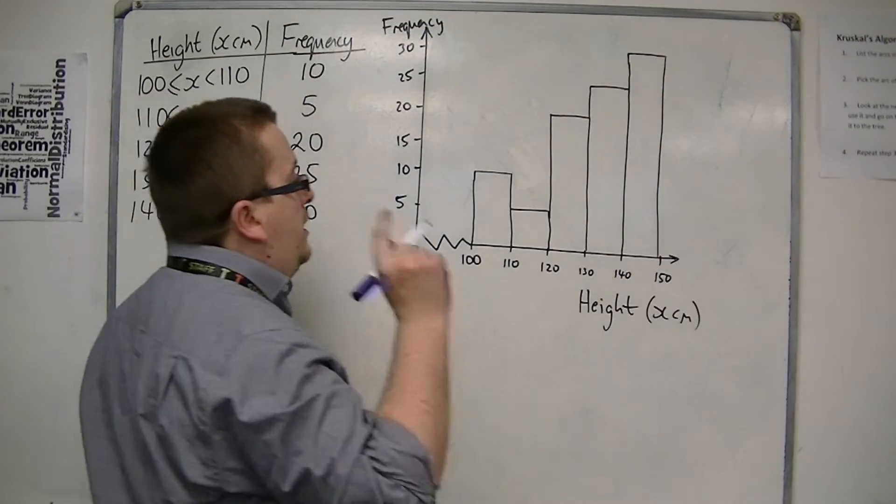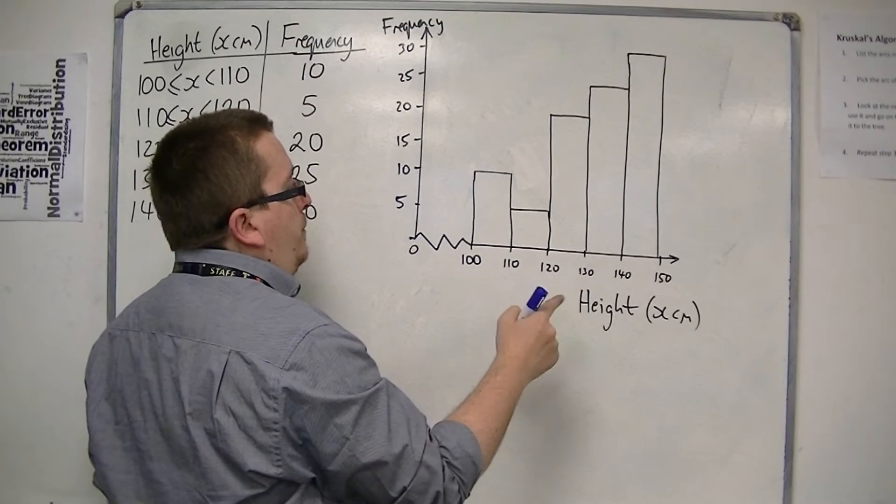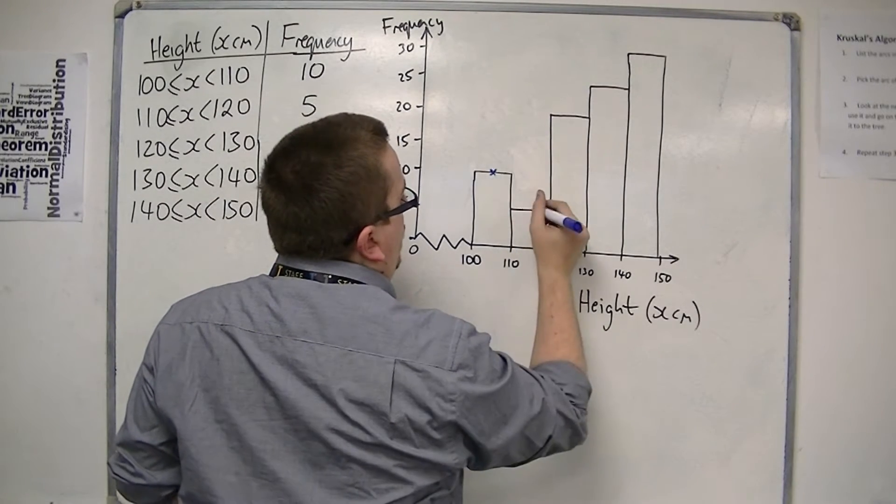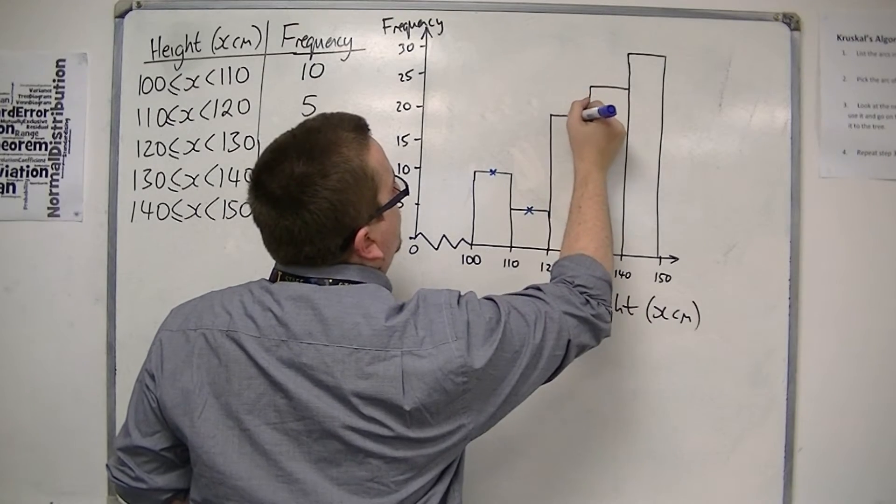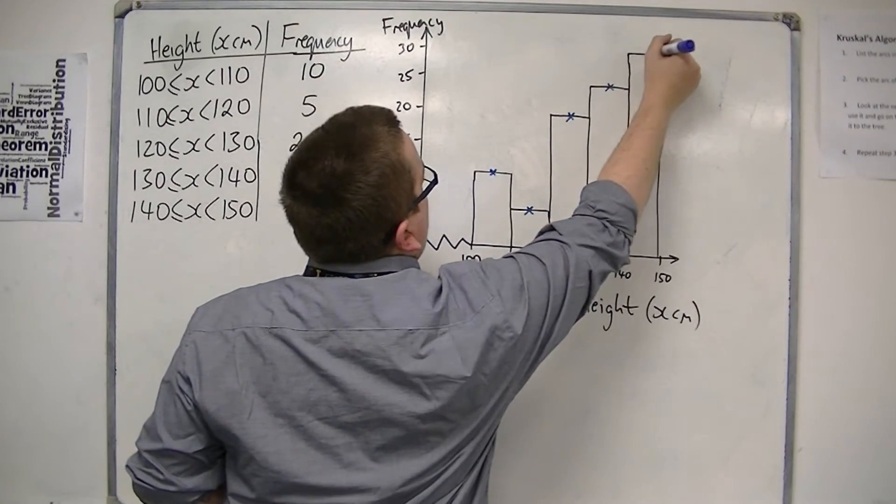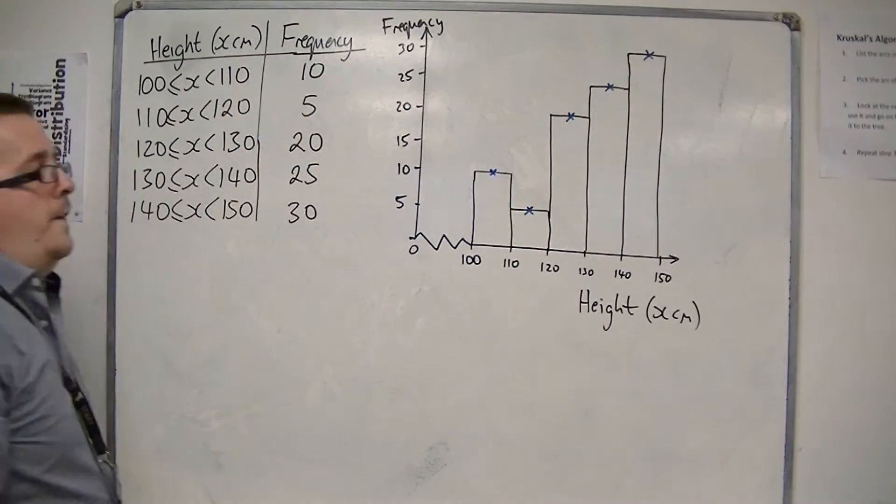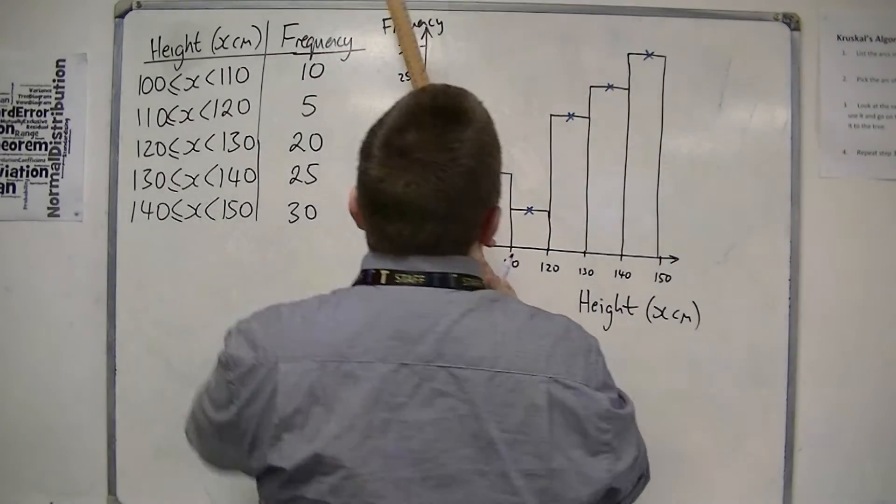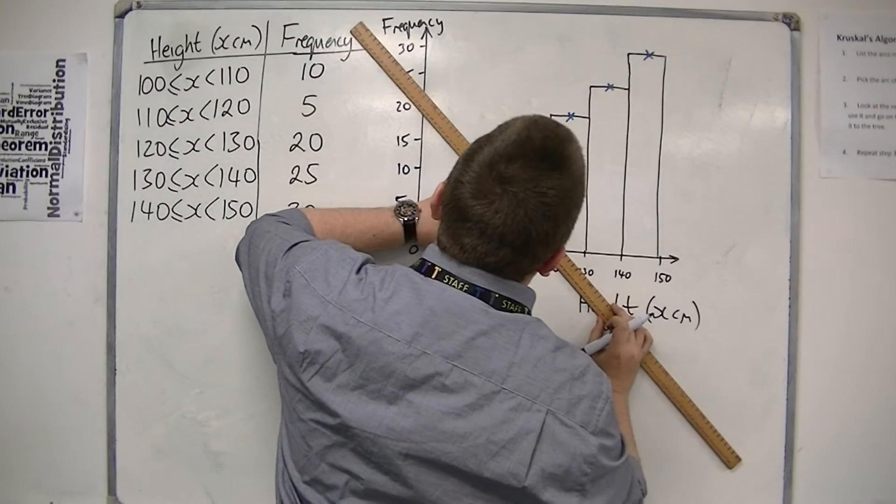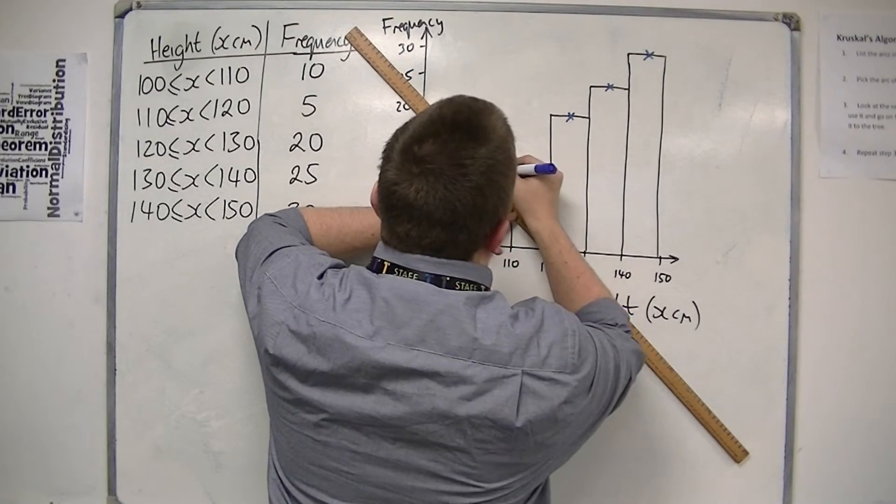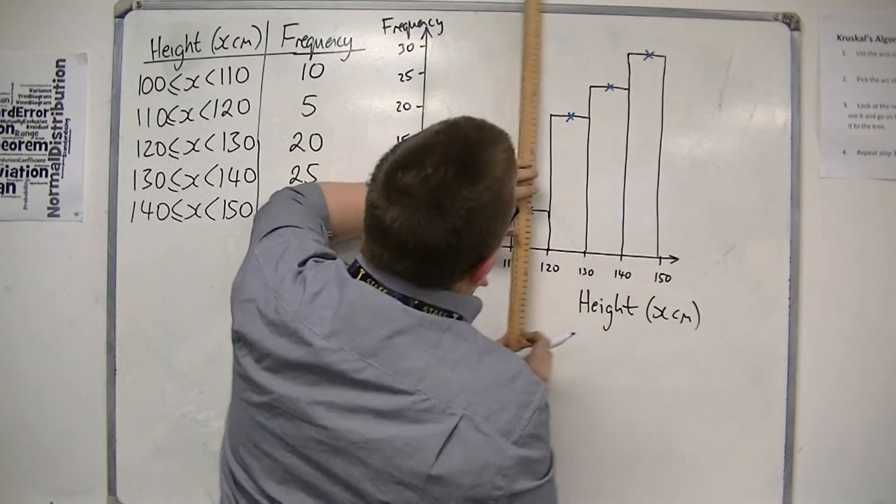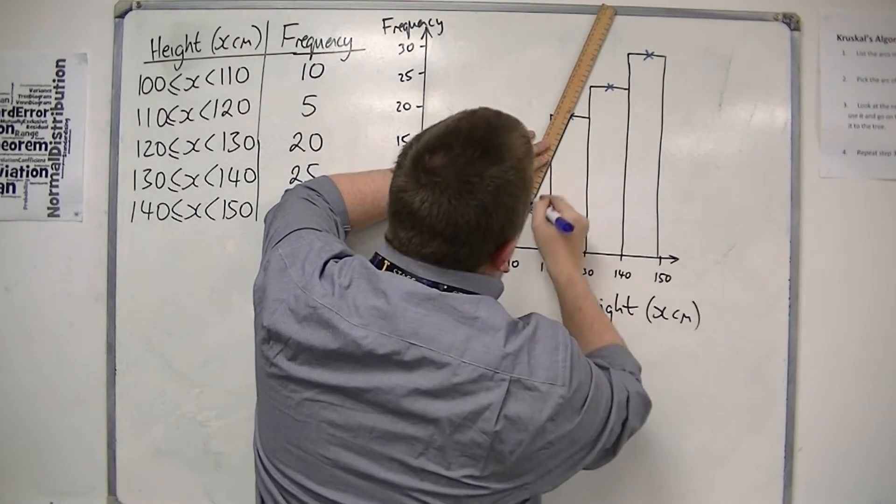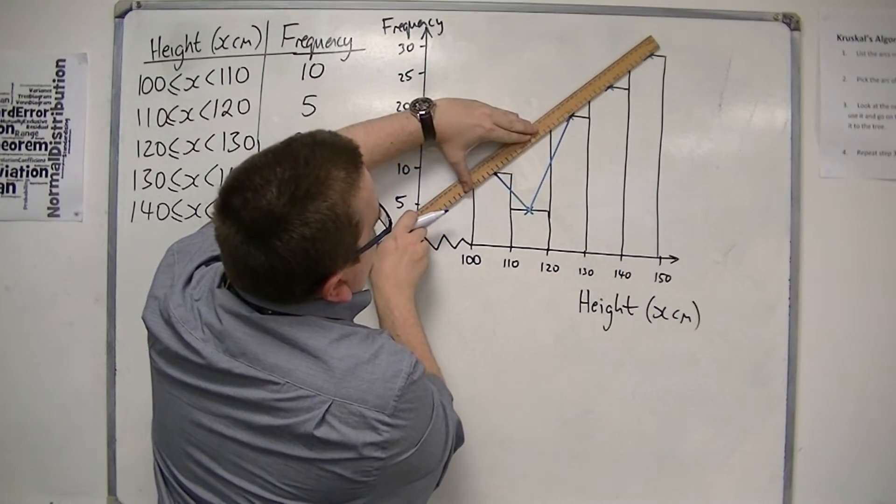It uses the midpoints of the groups and effectively the midpoints of the tops of the bars. Then you can draw and join those together. Notice I'm using a ruler now, rather than before.